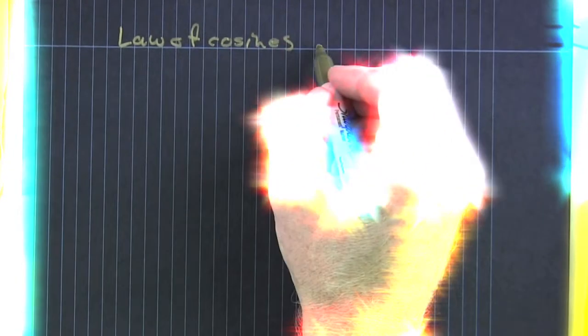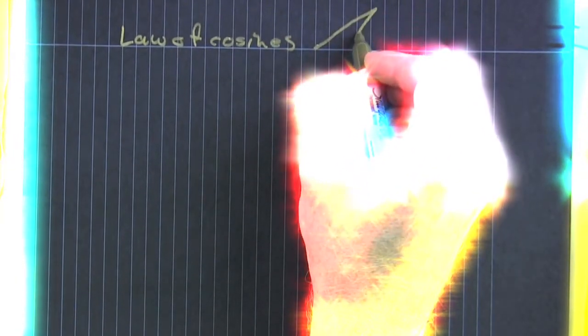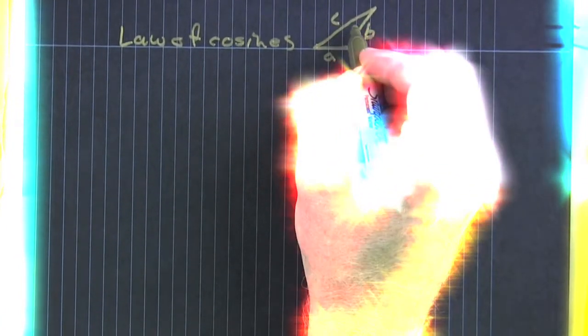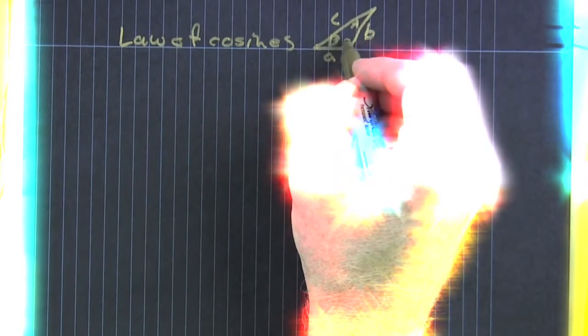Yeah, alright. So, I'm drawing a triangle, and I'm going to label that triangle, but the sides little a, little b, little c, and the angles big A, big B, big C.